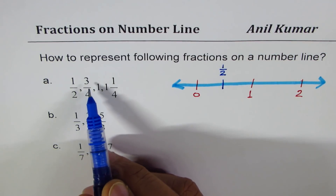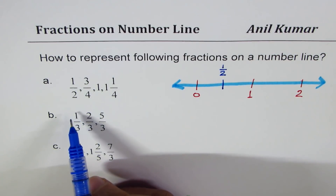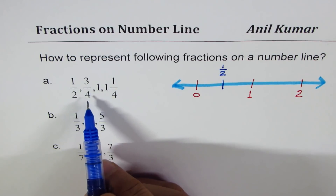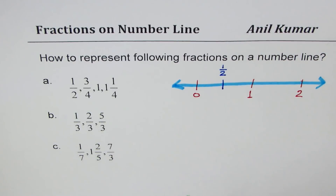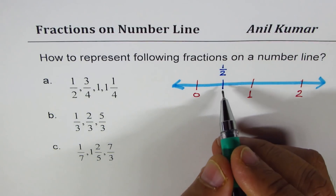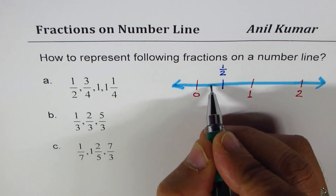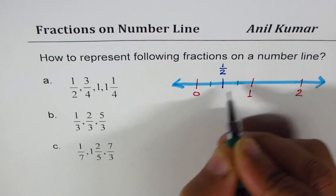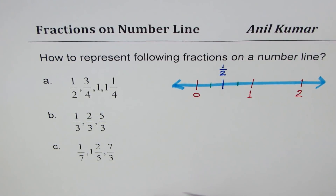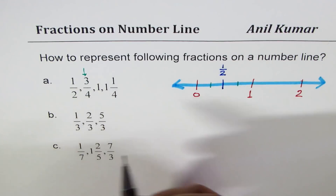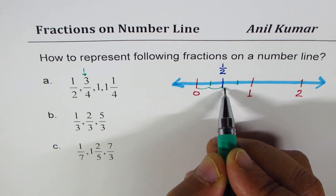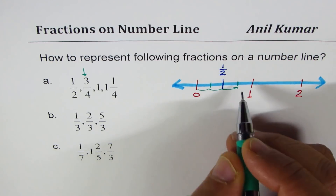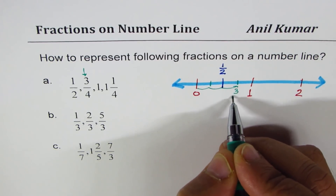The next number is 3/4. To get 3/4, we have to divide this segment from 0 to 1 into 4 equal parts and then take the third part. We already have 2 equal parts, so we'll do half of each, giving us 4 equal parts. When we say 3/4, we count from here: 1, 2, and 3. Each part is 1/4, so this is 3/4.